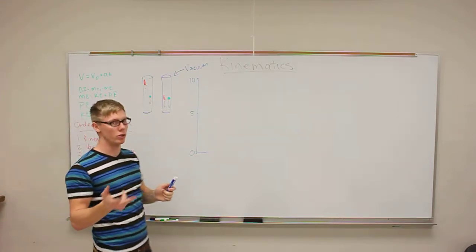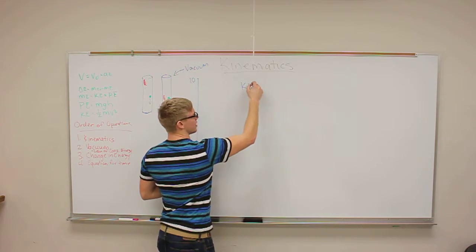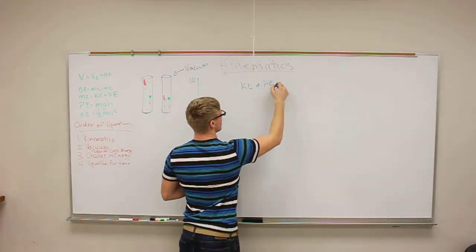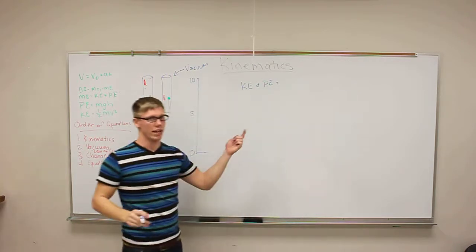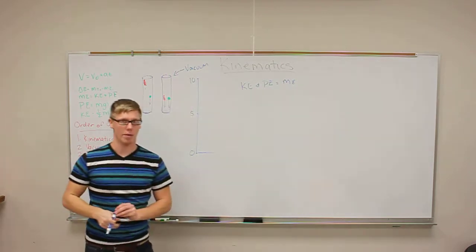So we're going to be talking about two types of energy today. We've got kinetic energy, which is abbreviated as KE, and potential energy, which is abbreviated as PE. Both those together combine to equal mechanical energy, and it's abbreviated as ME.